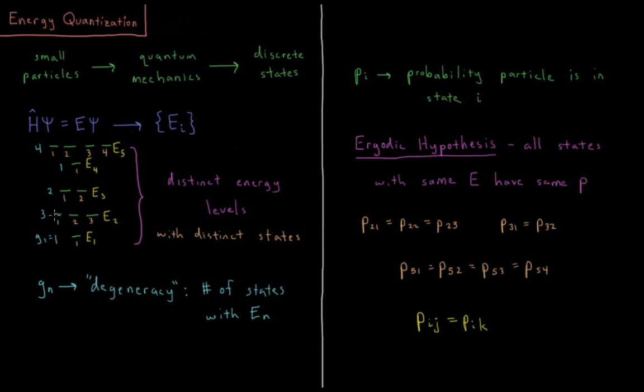So the ergodic hypothesis in statistical mechanics says that all states with the same energy have the same probability. This means that for energy level 2 here, state 2,1, 2,2, and 2,3, all have the same probability of the system being in that state.